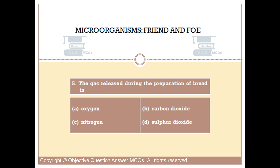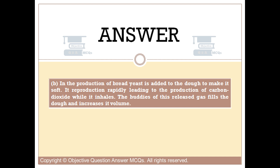Question number five. The gas released during the preparation of bread is: Option A: Oxygen. Option B: Carbon dioxide. Option C: Nitrogen. Option D: Sulfur dioxide. The right answer is option B. In the production of bread, yeast is added to the dough to make it soft. Yeast reproduces rapidly, leading to the production of carbon dioxide. The released gas fills the dough and increases its volume.